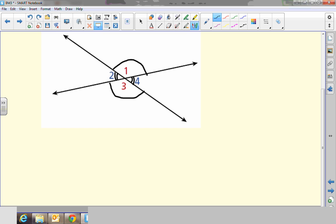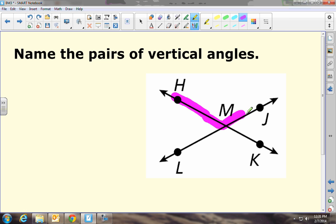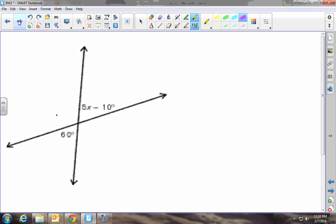Okay, so name a pair of vertical angles. Well, we've got a couple pairs. We have HMJ and LMK. Okay, so these are vertical angles. We could also do HML and JMK. So these are also going to be vertical angles.